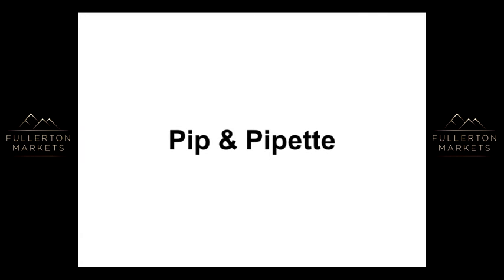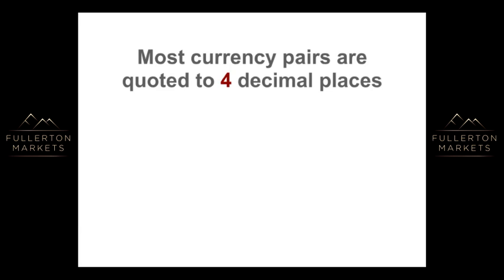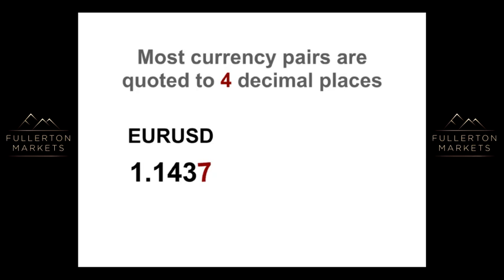PIP & PIPET. Most currency pairs are quoted to 4 decimal places. As an example, if the EURUSD is quoted at 1.1437, this means that 1 EUR is equal to 1.1437 USD at that point of time.